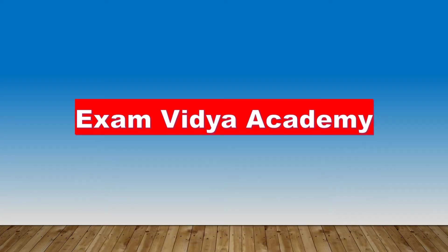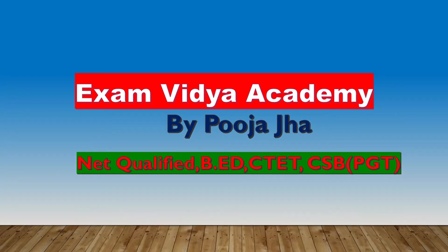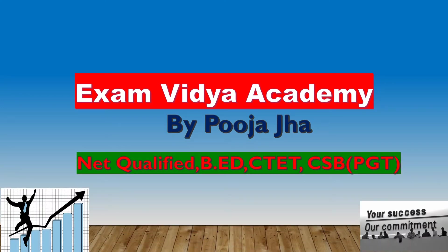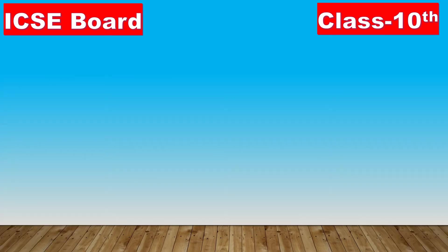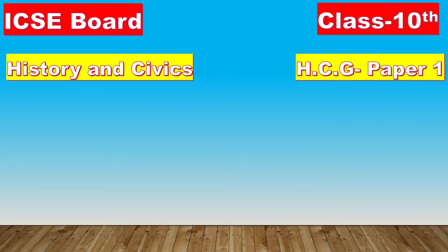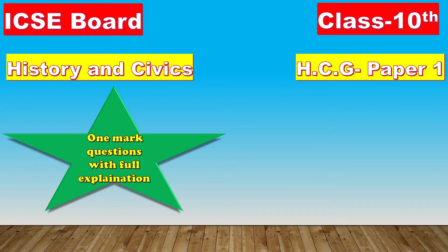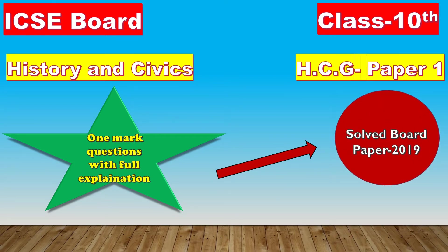Hello students, welcome to Exam with the iAcademy. Our motto is we should consistently do hard work for getting more success and more achievement throughout the life. Today I will discuss about ICSC Board Class 10, 2019 Board Question Paper of Social Science Paper 1 which consists of History and Civics. In this video I will discuss about questions with full explanation so that you can attempt any question related to the concerned topic. So be with this video till the end for knowing about the concept entirely.